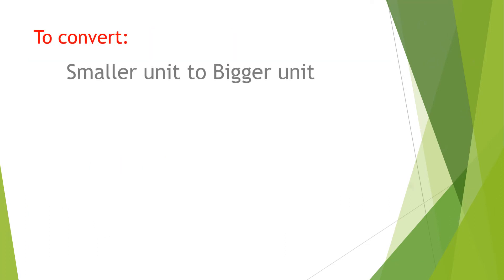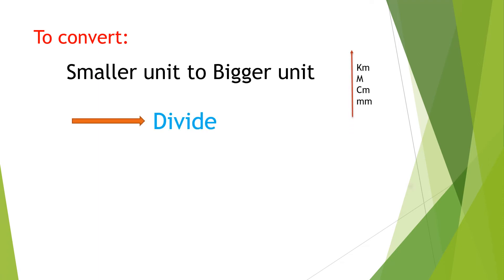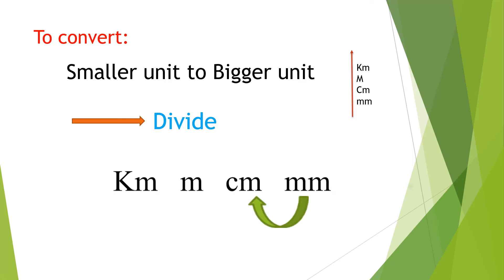To convert a smaller unit to a bigger unit, we have to divide the length by the conversion ratio. Suppose to convert mm to cm, we divide the number of mm by 10. To convert cm to m, we divide the number of cm by 100. Similarly, to convert m to km, we divide the number of m by 1000.